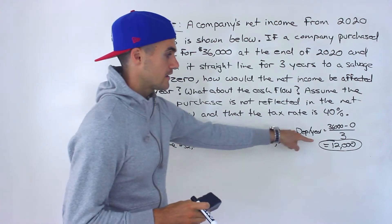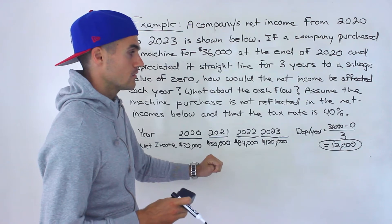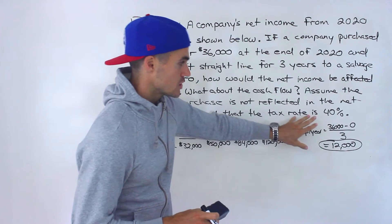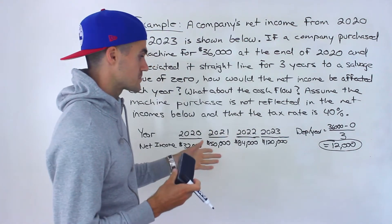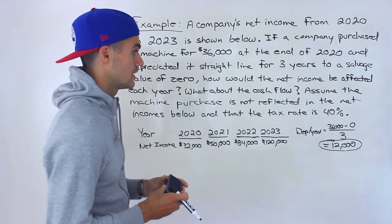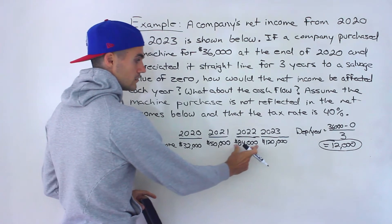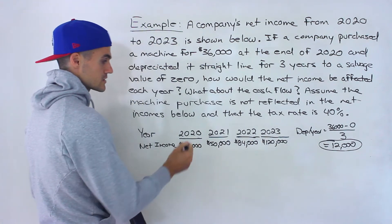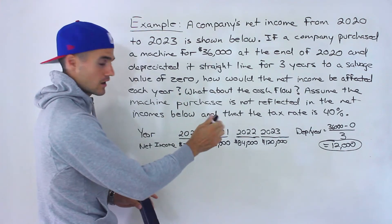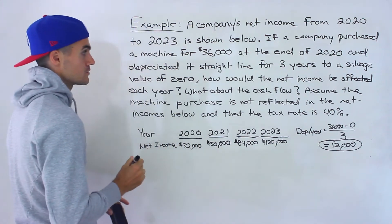Since we're adding an additional expense, we already know that net income is going to go down. The question is, adding in this depreciation with the tax rate, how specifically is the net income going to be affected? Note that this depreciation is only going to happen in 2021, 2022, and 2023 — not in 2020, because we purchased the machine at the end of 2020.